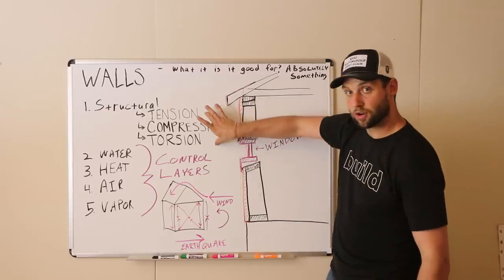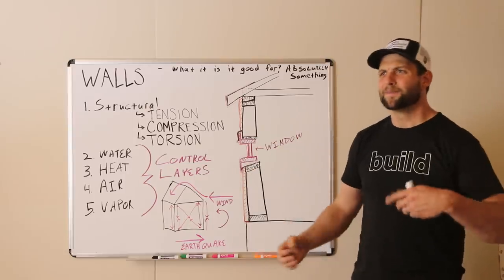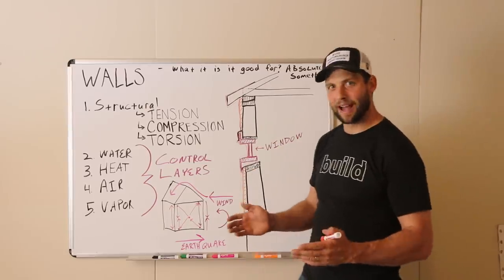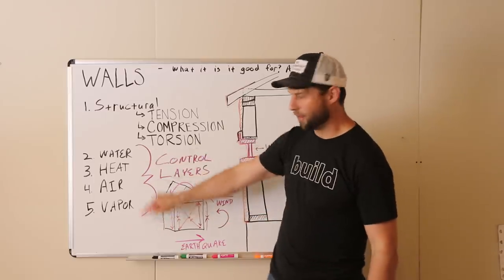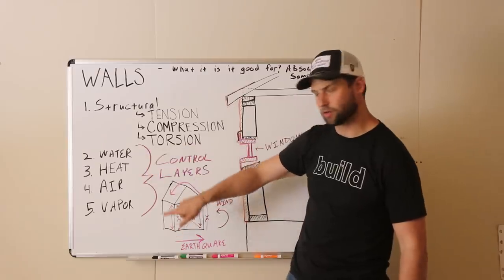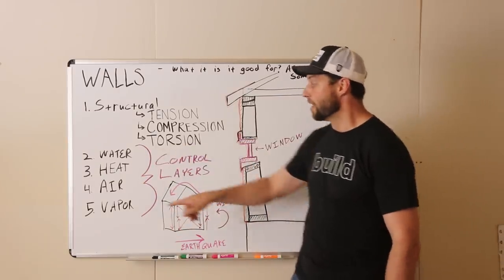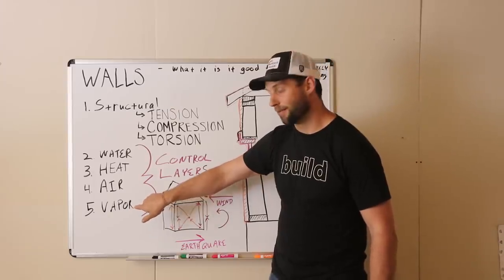So that is the structural components of the wall. Pretty obvious, pretty straightforward. Where it gets a little bit more divisive, I guess, is on the control layer. So a wall should control water infiltration. It should control heat transfer. It should control air infiltration. And it should also control vapor drive.